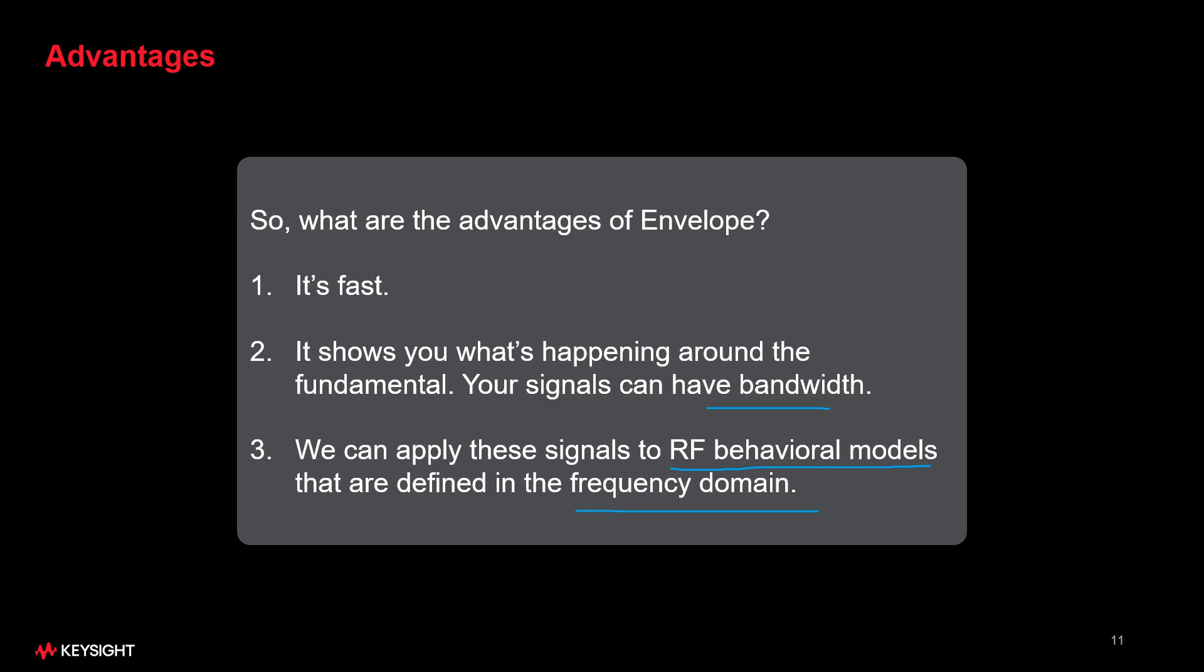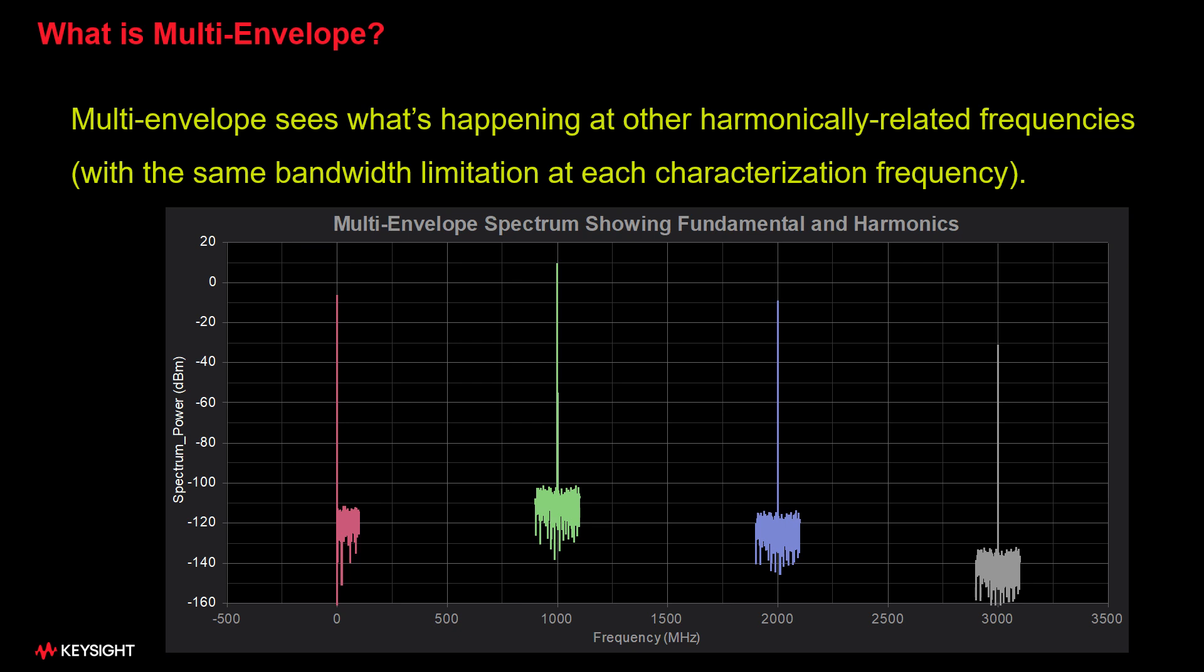So, what's multi-envelope? Multi-envelope sees what is happening at harmonically related frequencies as well. So, we turned on multi-envelope on our circuit and zoomed out to see the fundamental, the second and the third harmonic at 1,000, 2,000, and 3,000 megahertz, respectively.